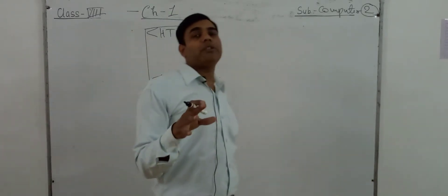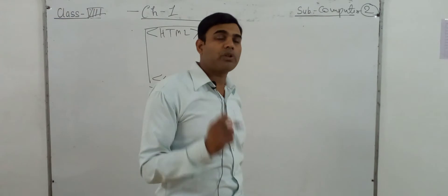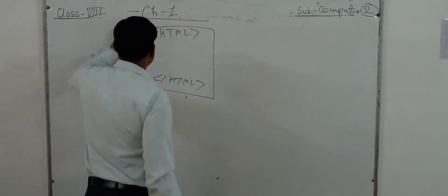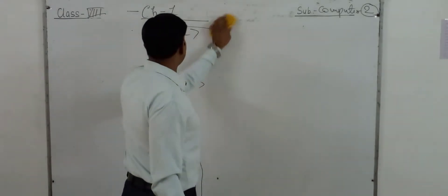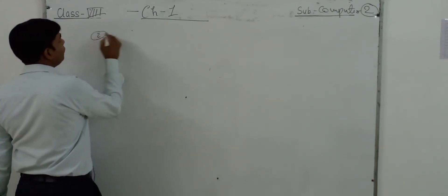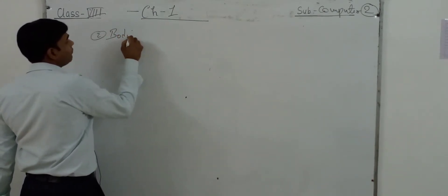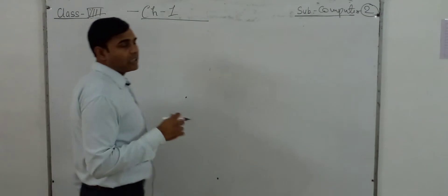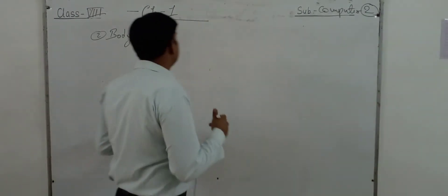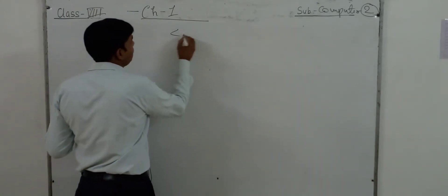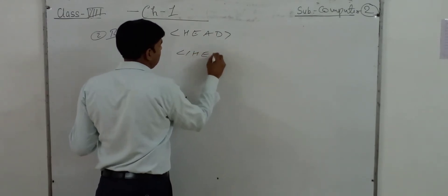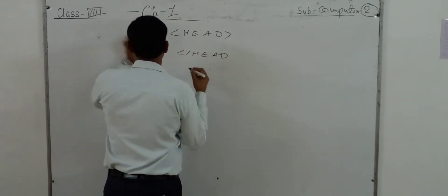HTML is a free form language, meaning the code can be written in upper case or lower case. After the HTML tag, the second important tag is the body tag. We have the head tag at the top and the body tag below, just like a human body — head is above and body is below.